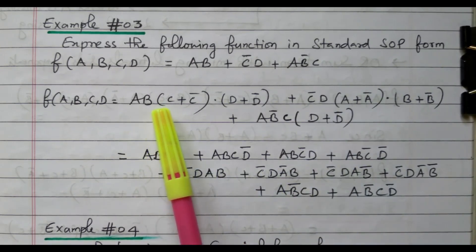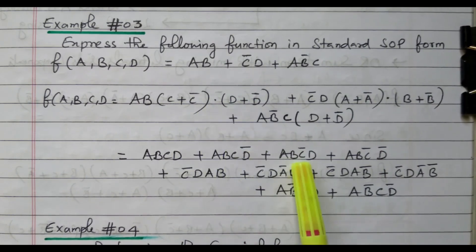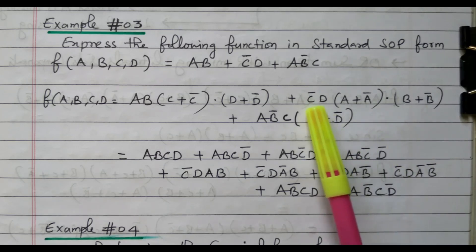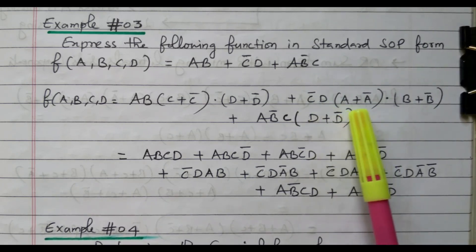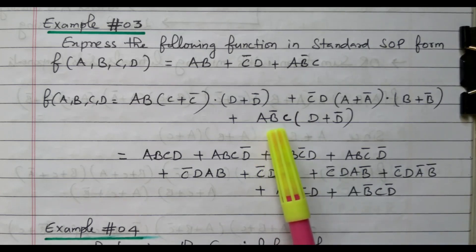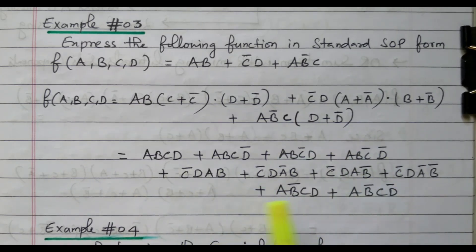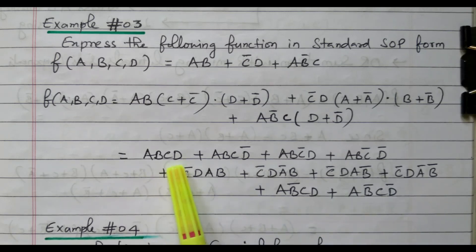Expanding AB(C + C̄)(D + D̄): ABCD + ABC̄D + ABCD̄ + ABC̄D̄. Expanding C̄D(A + Ā)(B + B̄): ABC̄D + AB̄C̄D + ĀBC̄D + ĀB̄C̄D. Expanding AB̄C(D + D̄): AB̄CD + AB̄CD̄. All terms are available. There are no repeated terms, so we keep all as they are. This is a standard SOP form — 10 product terms are available, all having all four literals A, B, C, D.